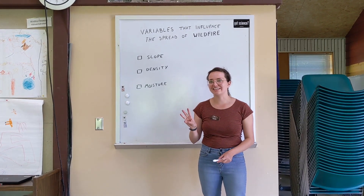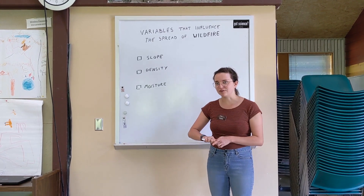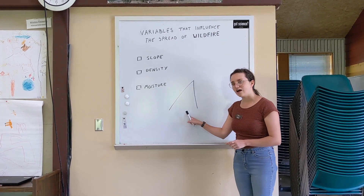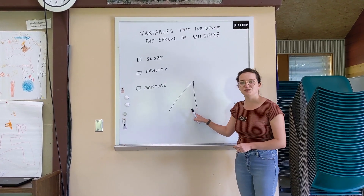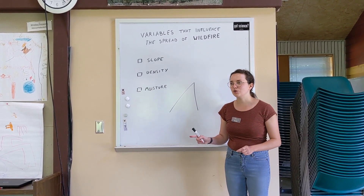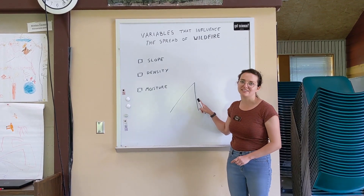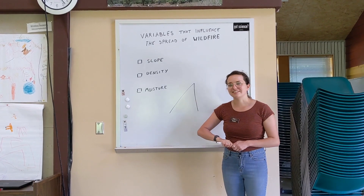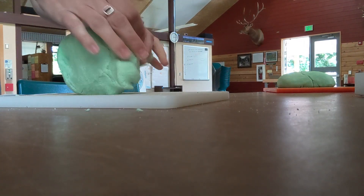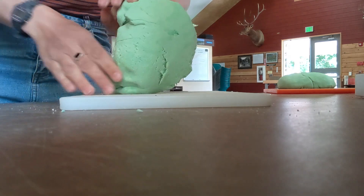We're going to perform three experiments today to test three different variables. The first one we're going to talk about is slope. I'm going to draw a picture of a mountain and each side is going to have a different slope. Which side do you think has the steeper slope? If you said this side, you are correct. One way to think about slope: the gradual slope is the side of the mountain you'd want to hike up, and the steep slope is the side you'd want to sled down. Let's perform an experiment to see how slope affects the spread of wildfire. We're going to construct two scientific models out of salt dough — one with a gradual slope and one with a steep slope — to represent our mountains.